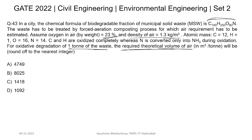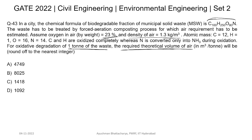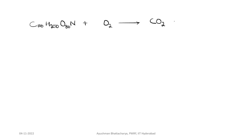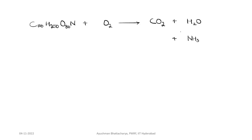We write the chemical equation for the oxidative degradation. Since N is converted only to ammonia (NH₃), and C and H are oxidized completely to CO₂ and H₂O, we set up the balanced equation accordingly. The equation is written with the given molecular formula of the waste reacting with O₂ to produce CO₂, H₂O, and NH₃.